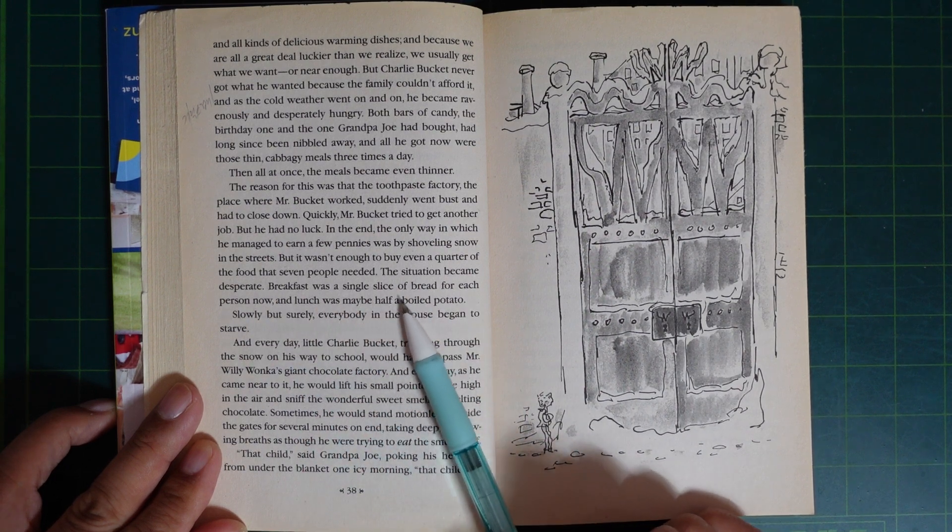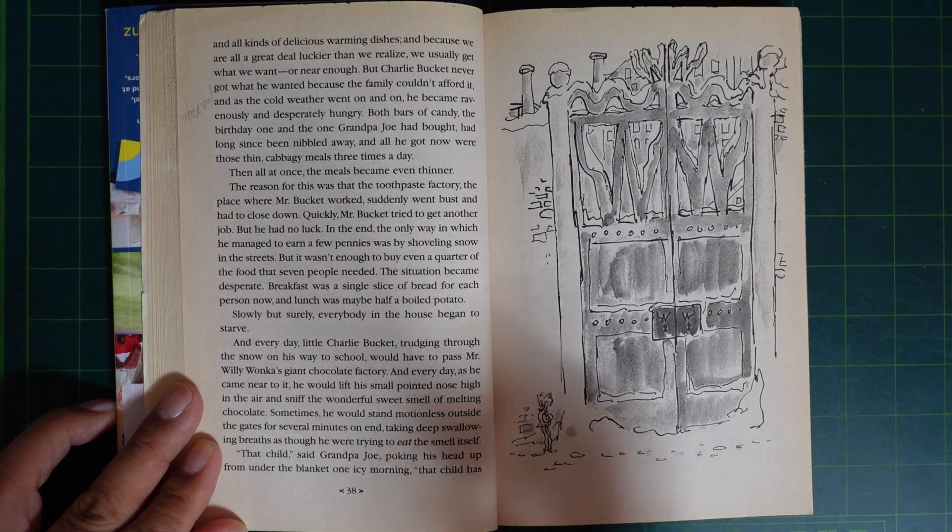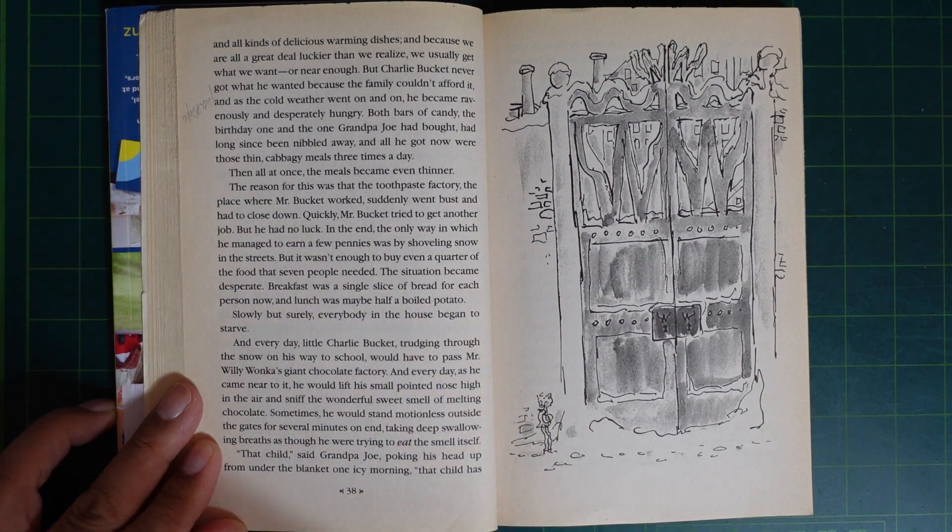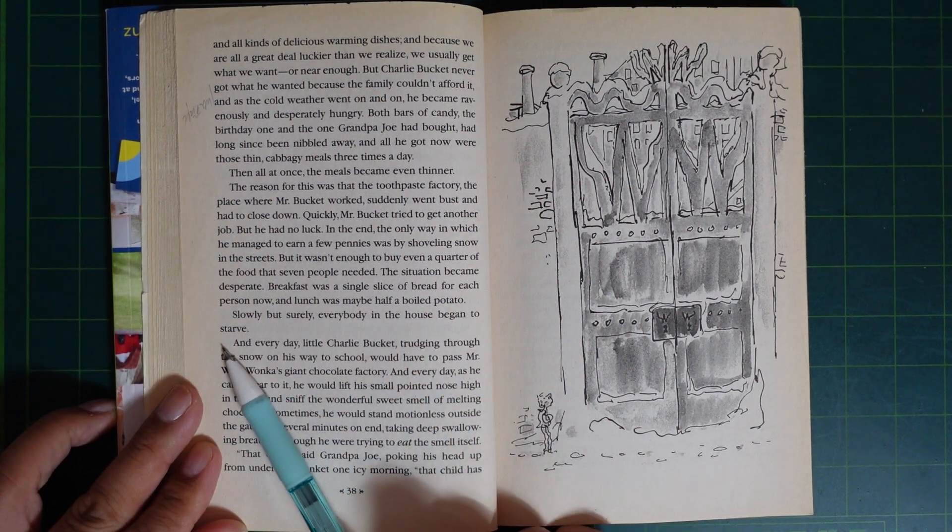But it wasn't enough to buy even a quarter of the food that seven people needed. The situation became desperate. Breakfast was a single slice of bread for each person now, and lunch was maybe half a boiled potato. Slowly, but surely, everybody in the house began to starve.